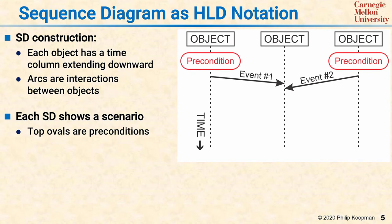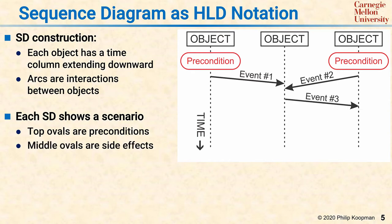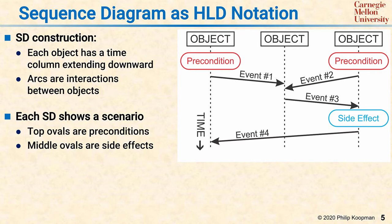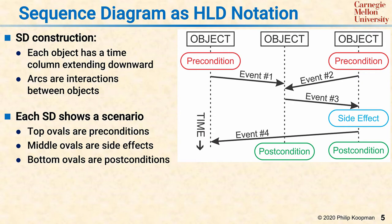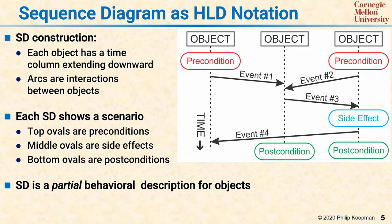There are optional ovals on the timelines. Ovals at the top are typically preconditions — what a precondition means is the following has to be true for this sequence diagram to apply. If it's not true, you need to find a different sequence diagram with all preconditions satisfied. Ovals in the middle are typically side effects, such as a variable assignment or producing an output to the real world. Ovals at the bottom are postconditions — properties that are true at the completion of the sequence diagram. Overall, a sequence diagram is a partial behavioral description for the interaction among a set of objects.